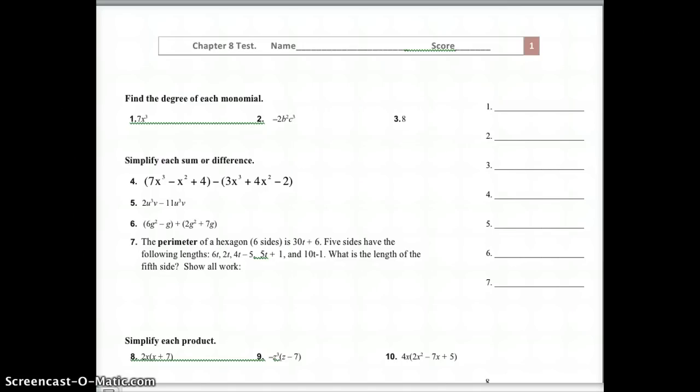On the first one, remember to find the degree of a polynomial. We take the highest exponent if it's a polynomial in one variable. So the first one, 7x to the third, there is only one exponent, so that's a third degree.